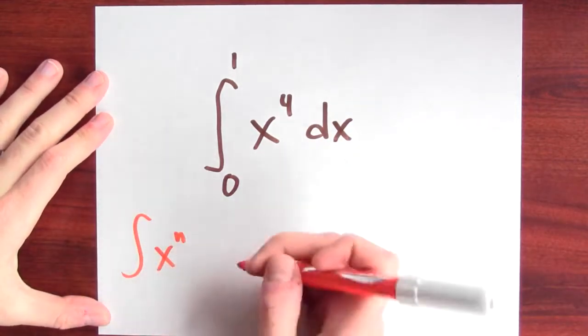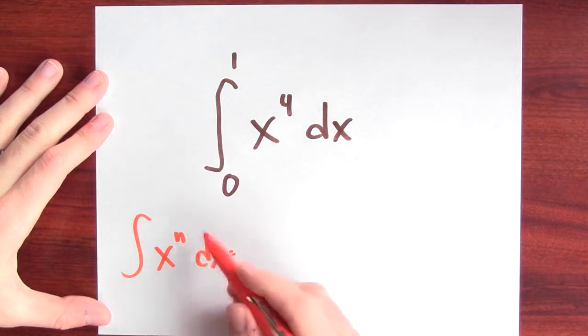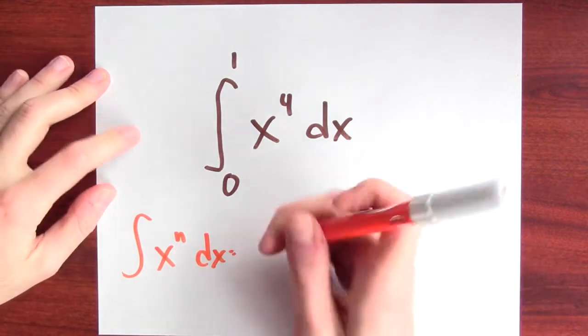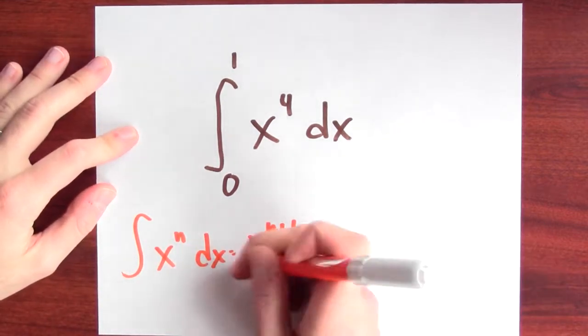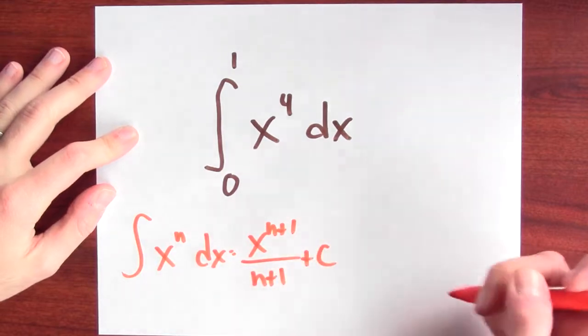Well, what's an antiderivative just for x to the n, right? As long as n isn't minus 1. An antiderivative for this is x to the n plus 1 over n plus 1 plus c.